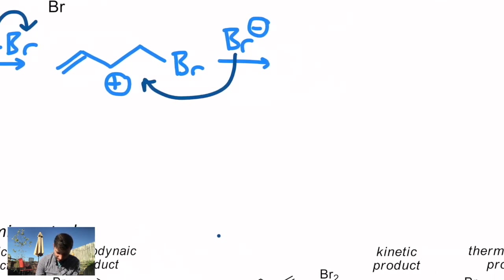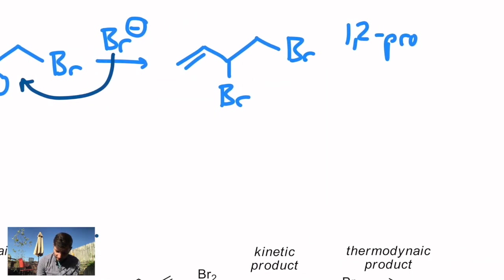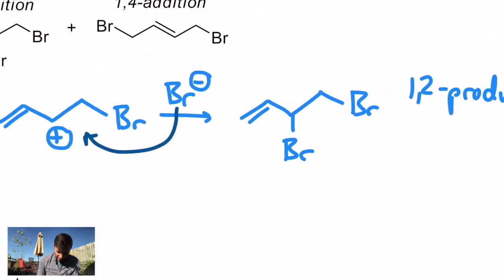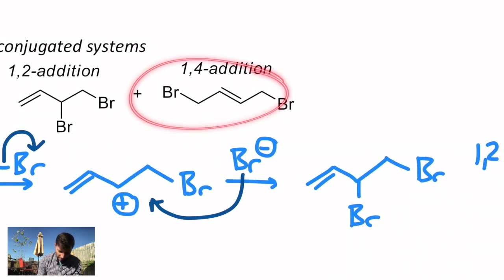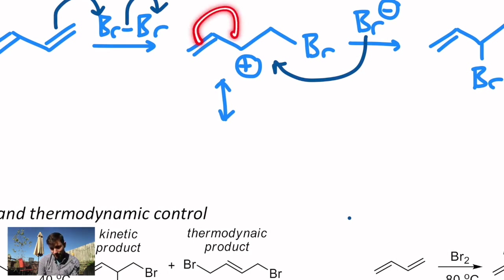It's this cation directly that gets us to the addition product we're perhaps used to seeing from Orgo 1. You get the 1,2 product. Why is this called the 1,2 product? Well, number that carbon chain from 1 to 4. The addition occurs on carbons 1 and 2. There's another product. How do we explain this other product? It happens to be called 1,4 for the same reason, numbering the carbon chain. It's because of the resonance contribution of that cation.